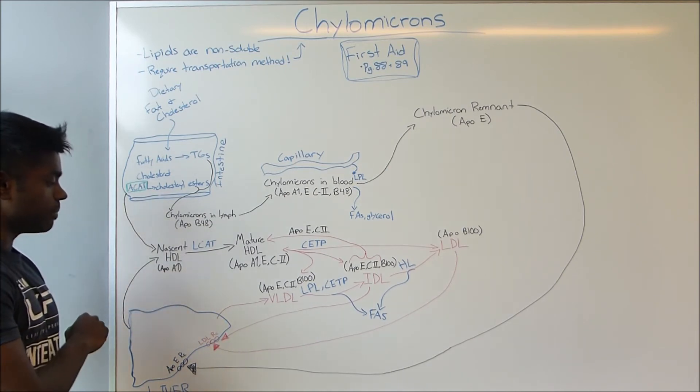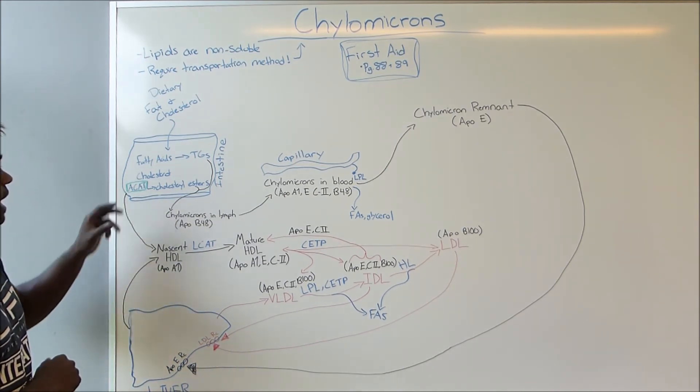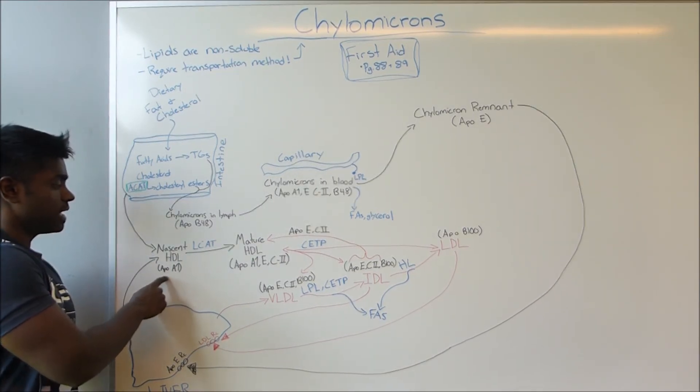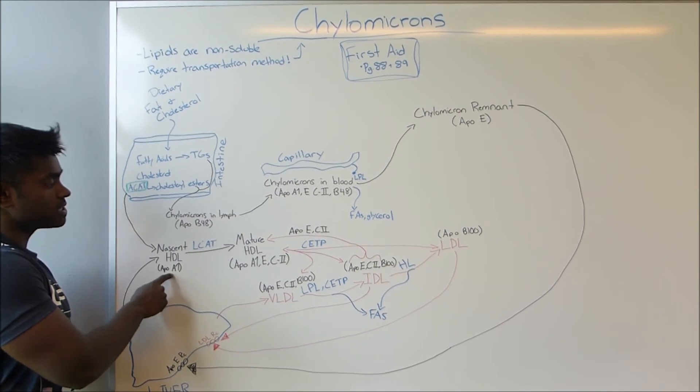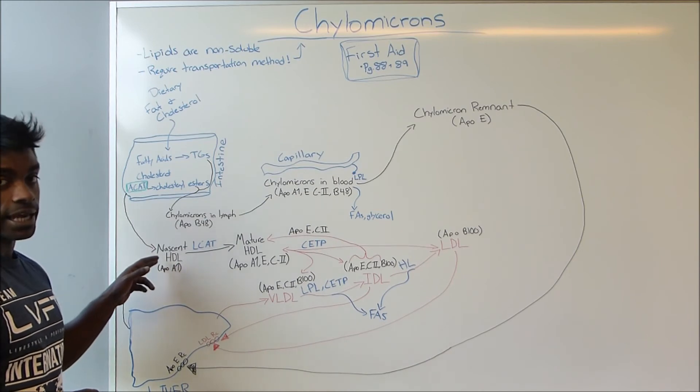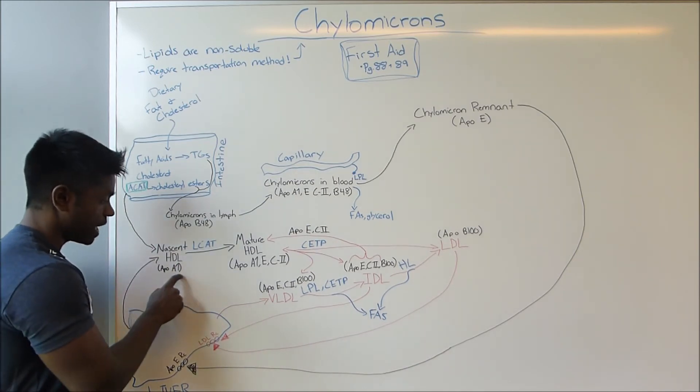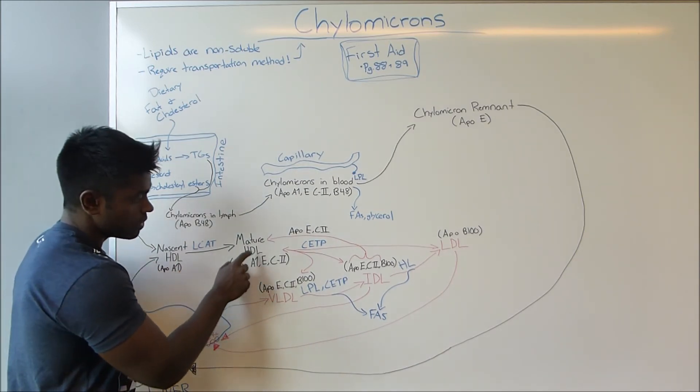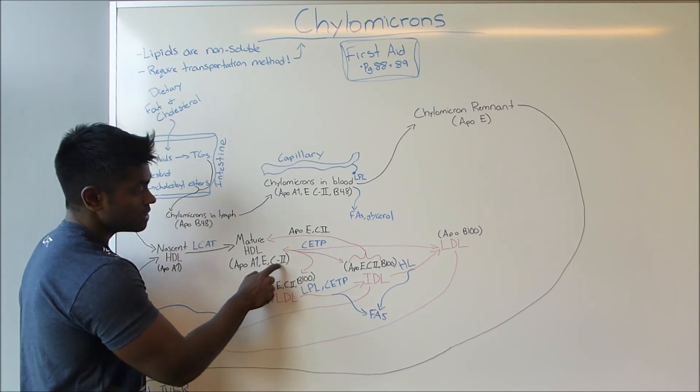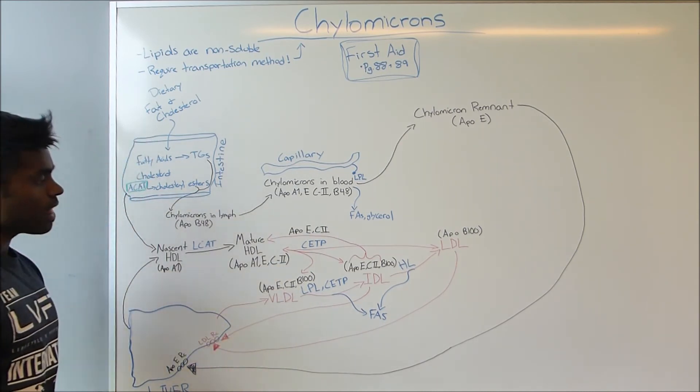This HDL can actually be secreted by both the liver and the intestines and it contains a protein called ApoA1. ApoA1 is important because it's going to activate the enzyme LCAT, and LCAT causes the nascent HDL which only has ApoA1 to be converted into the mature HDL which actually has ApoE and ApoC2 as well.